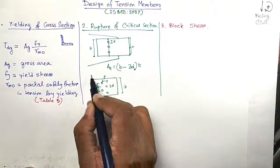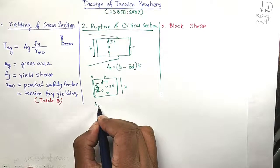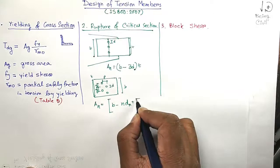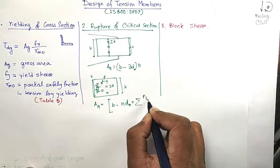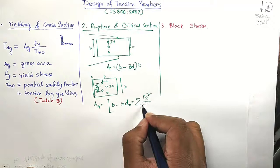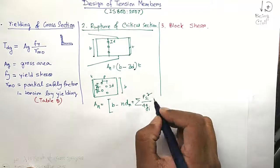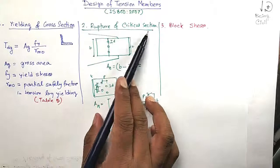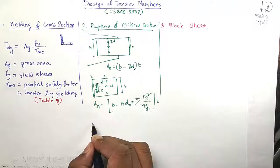Then the AN is calculated by this formula: B minus ND plus summation of PS²/(4G) times T. And when you get the net area, the design strength for rupture of the critical section will be TDN equals 0.9×AN×FU / γM1.